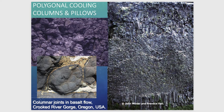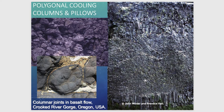Sometimes lava flow cooling is more complicated due to asymmetry in the distribution of isotherms, causing differential contraction resulting in sets of columnar jointing fractures with different orientations. These are not dikes but fracture sets forming within the lava flow itself.